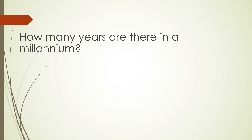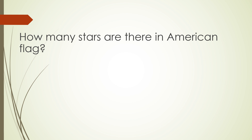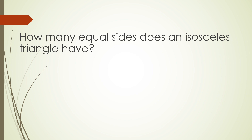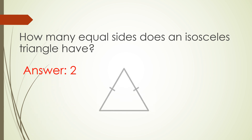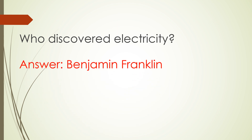How many years are there in a millennium? Answer: one thousand. How much of Earth's surface is covered by ocean? Answer: 71%. How many stars are there in the American flag? Answer: 50. How many equal sides does an isosceles triangle have? Answer: 2. Who discovered electricity? Answer: Benjamin Franklin.